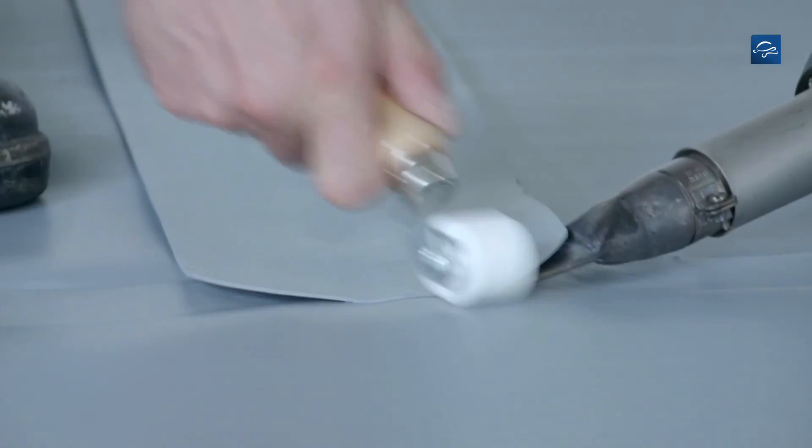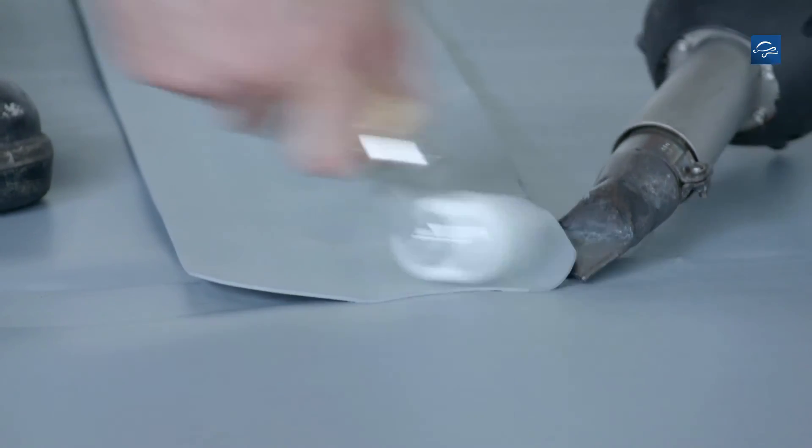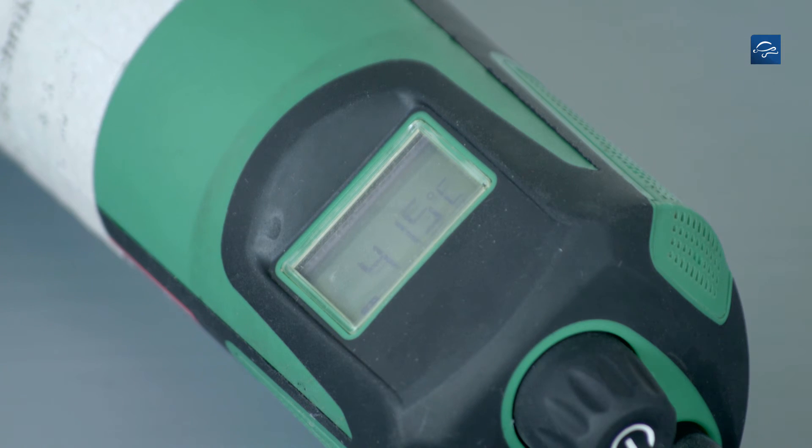You can now seal weld the strip all around with the handheld welder. Set the welding temperature to approximately 415 degrees centigrade.